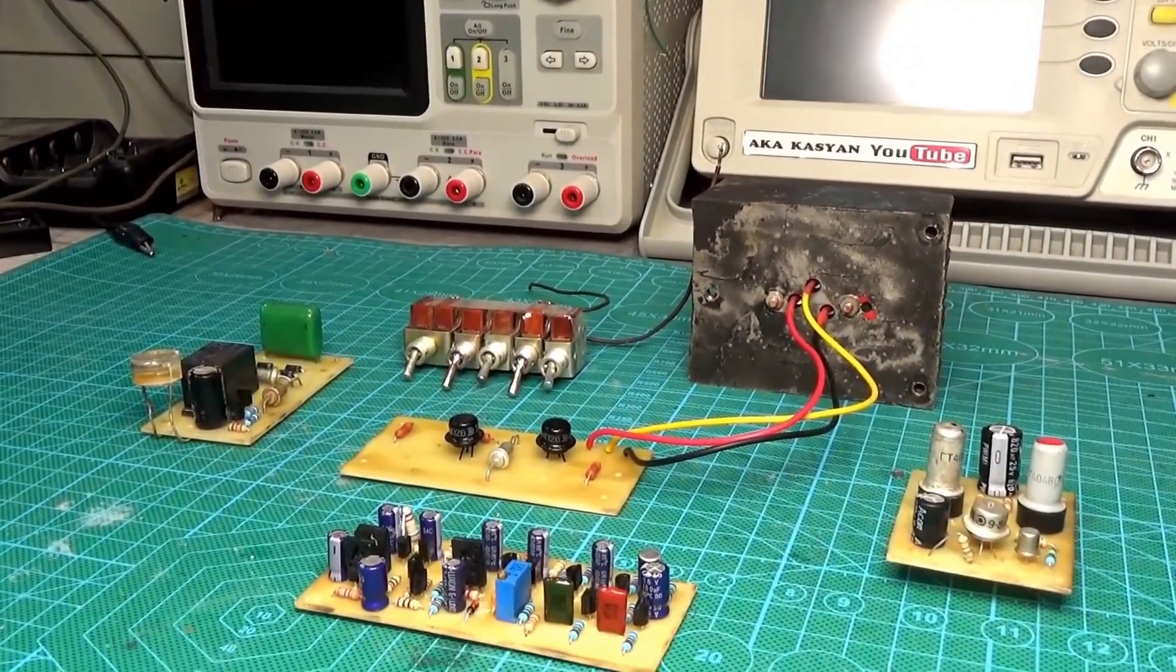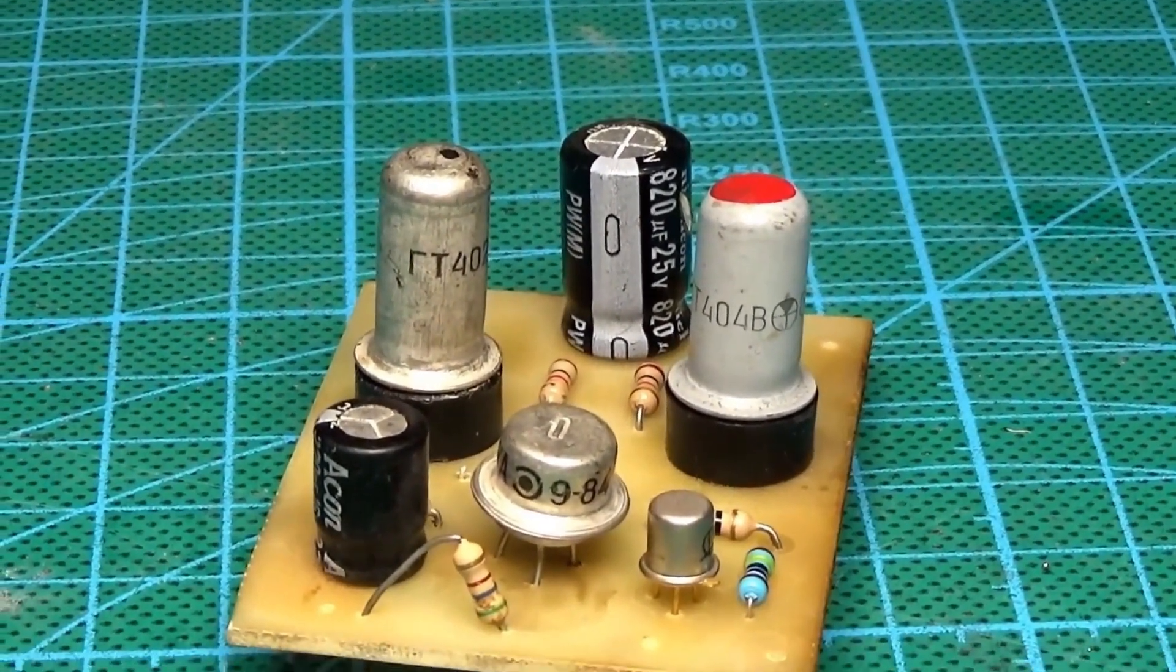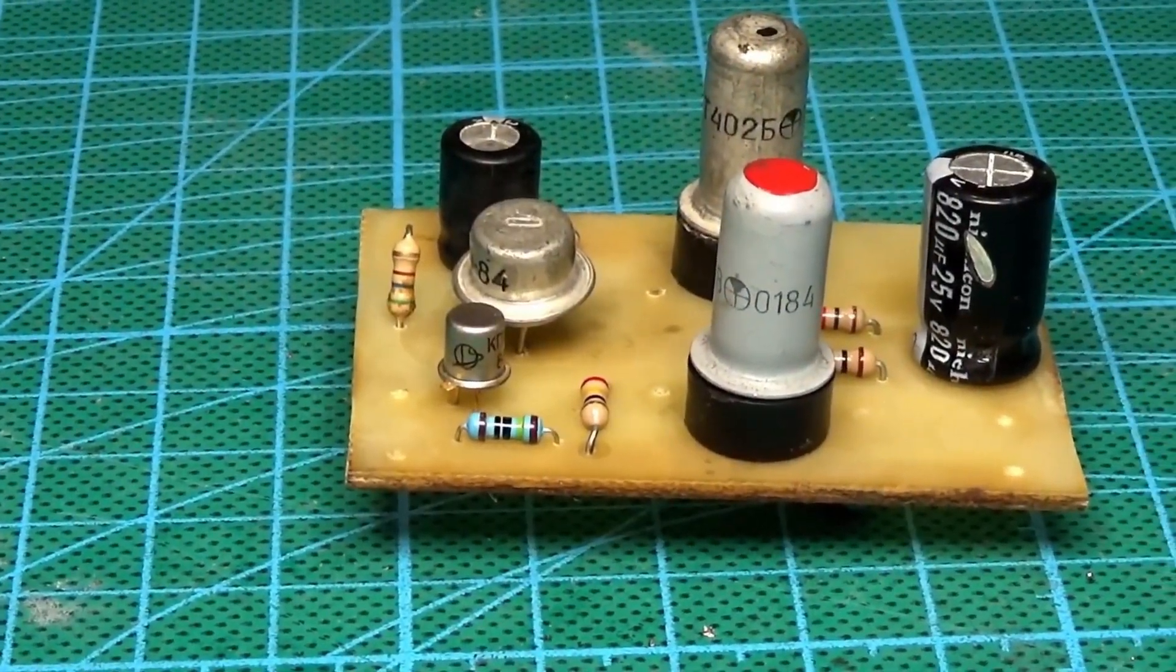Originally there were 5 constructions. The fifth was an amplifier on germanium transistors, but just talking about it would take up half of the video, so we'll cover it another time.